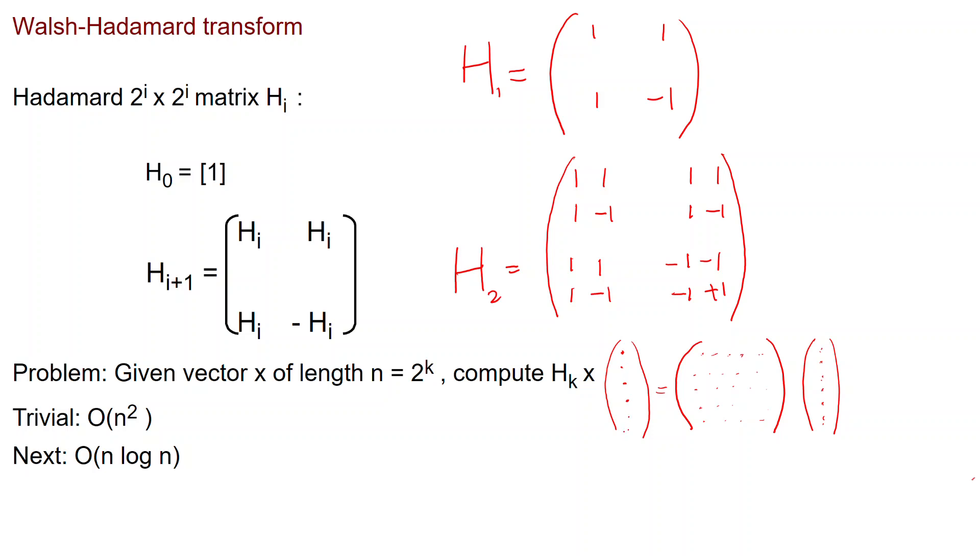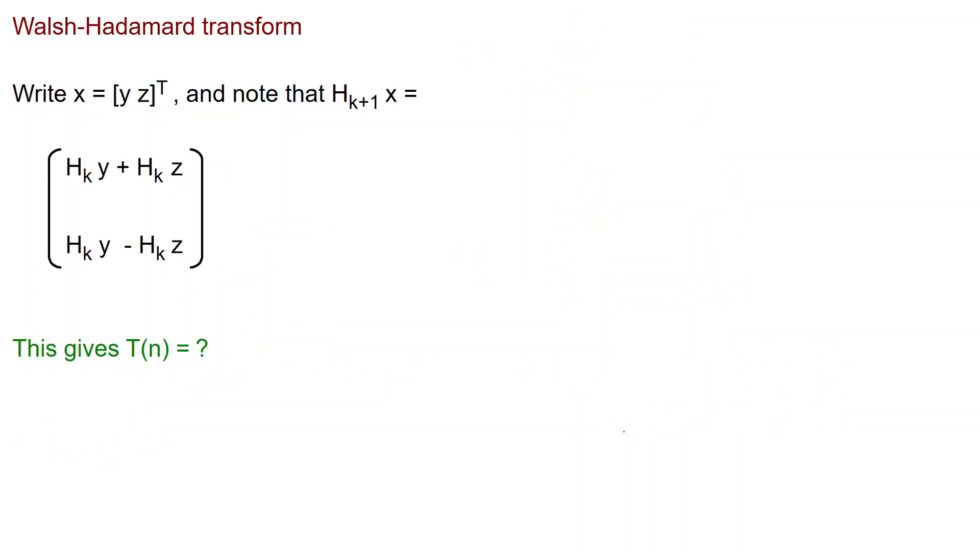And the fast Walsh-Hadamard transformation allows you to compute the product much faster in time order of n log n. And it is a fairly straightforward divide-and-conquer algorithm once you have the definition of the matrix clear.